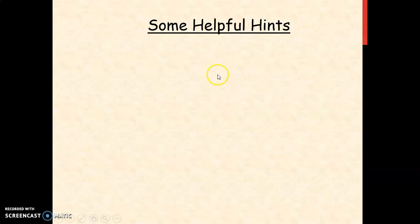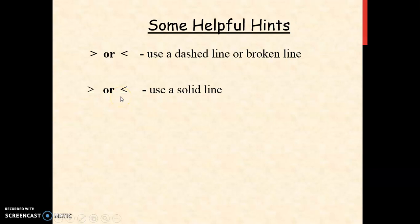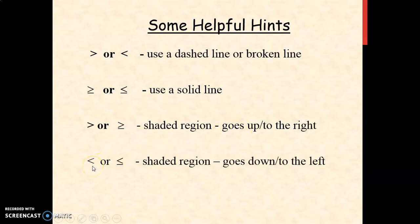There are some helpful hints in order to graph a linear inequality. First, if we're going to use greater than or less than, you're going to use a dashed line or broken line. If the inequalities are greater than or equal to, or less than or equal to, you're going to use a solid line. If we use greater than or greater than or equal to, the shaded region goes up or above the line or to the right. If the inequality symbol is less than or less than or equal to, the shaded region goes down or below the line or to the left.